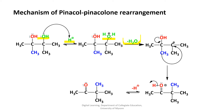Step 3 involves the shifting of the methyl group to the positively charged carbon in a rearrangement of the compound. In step 4, the oxygen atom which is doubly bonded to the carbon is now deprotonated, giving rise to the required pinacolone, or in other words, the methyl tertiary butyl ketone.